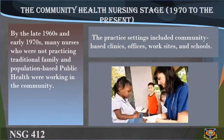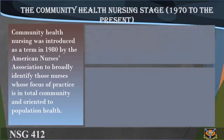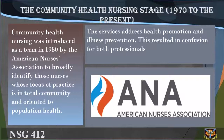The community health nursing stage runs from 1970 to the present. By the late 1960s and early 1970s, many nurses not practicing traditional public health were working in the community in settings including community-based clinics, offices, work sites, and schools. Community health nursing was introduced as a term in 1980 by the American Nurses Association to broadly identify nurses whose focus of practice is the total community and oriented to population health, addressing health promotion and illness prevention.